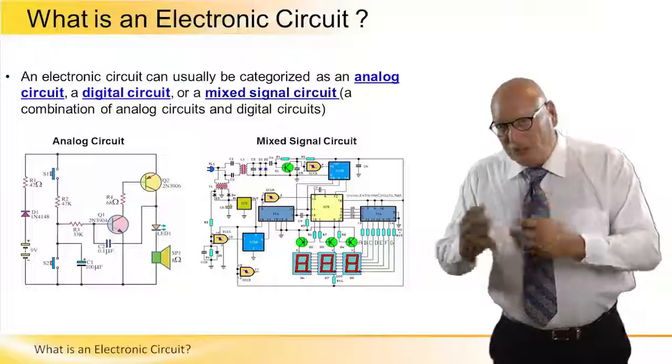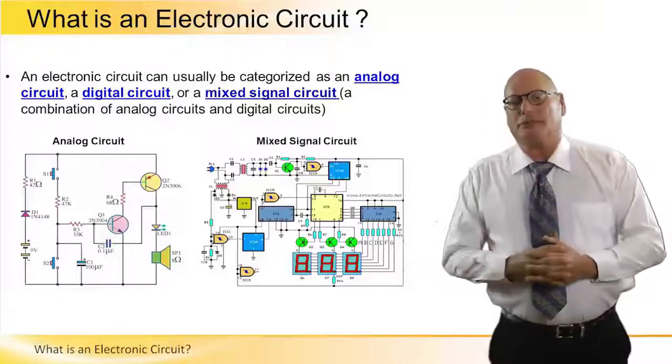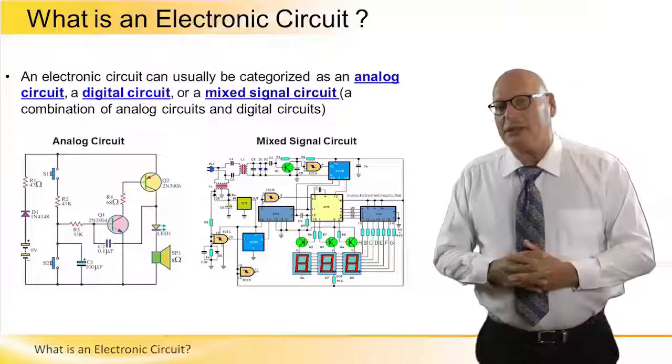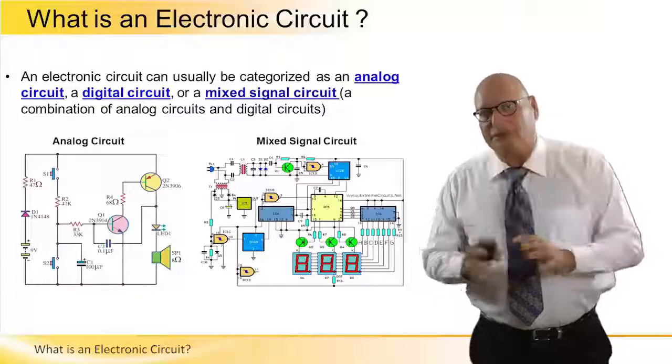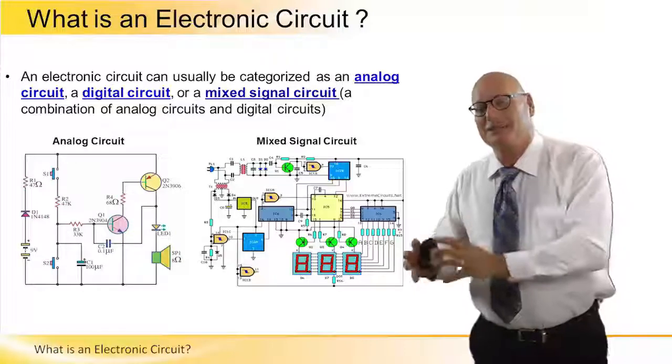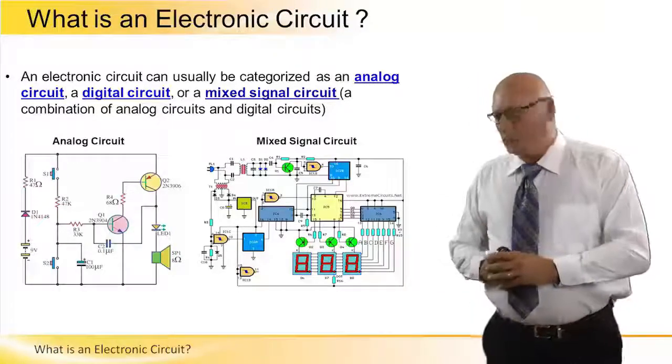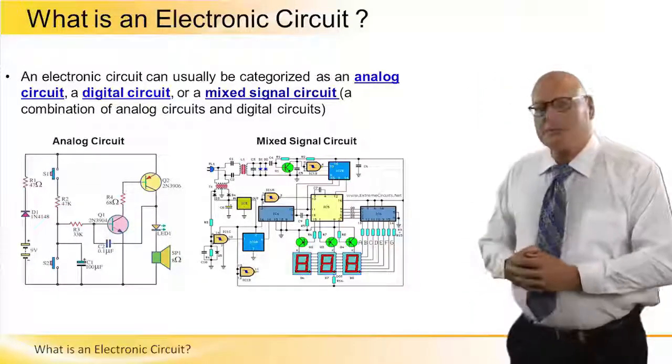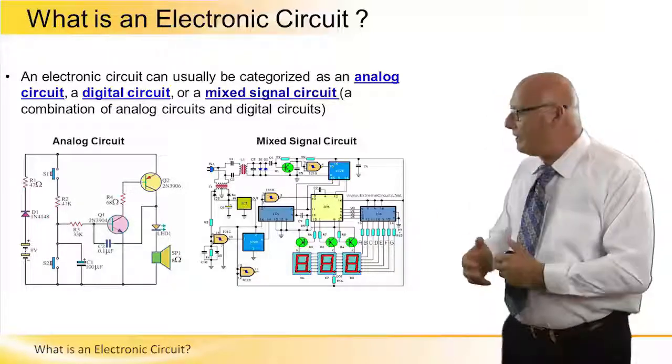If we continue to analyze what is electronic circuit, we can distinguish between three different types of families: analog circuit, digital circuit, and mixed signal circuit. What we have here on the left is a typical example of an analog circuit.